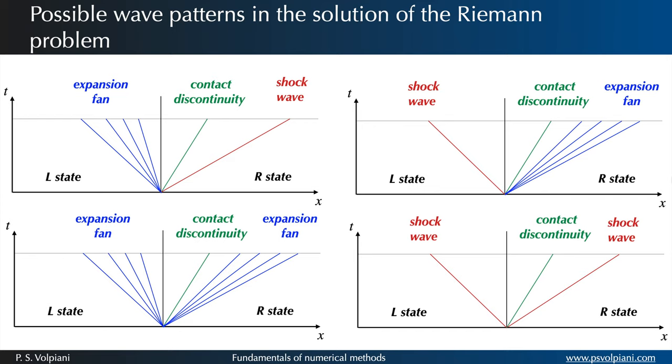All the available combinations produce four wave patterns. In fact, a fifth pattern is also possible in theory and it contains a vacuum state, but we're not interested in this case.